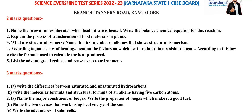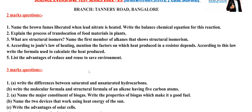According to Joule's law of heating, mention the factors on which heat produced in a resistor depends. According to this law, write the formula used to calculate the heat produced. Next, list the advantages of reduce and reuse to save the environment.